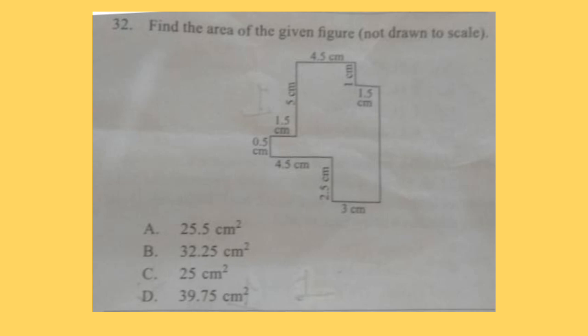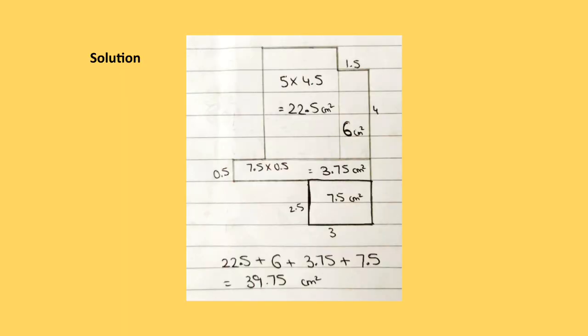Question 32: Find the area of the given figure. You can pause the video and calculate. Correct answer is option D, 39.75 centimeter square. Here is the solution given. Please check your answer with it.